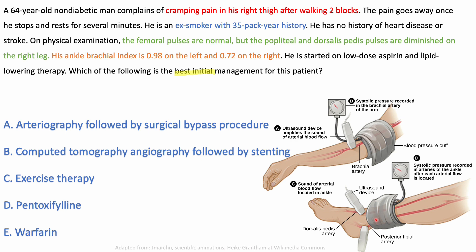Normally, blood pressure in the lower limb is higher than the upper limb, so dividing lower by upper should give at least 1.0. In this patient, the ABI is 0.98 on the left and 0.72 on the right — the right side is more affected, consistent with the diminished pulses on the right leg. This patient needs treatment.